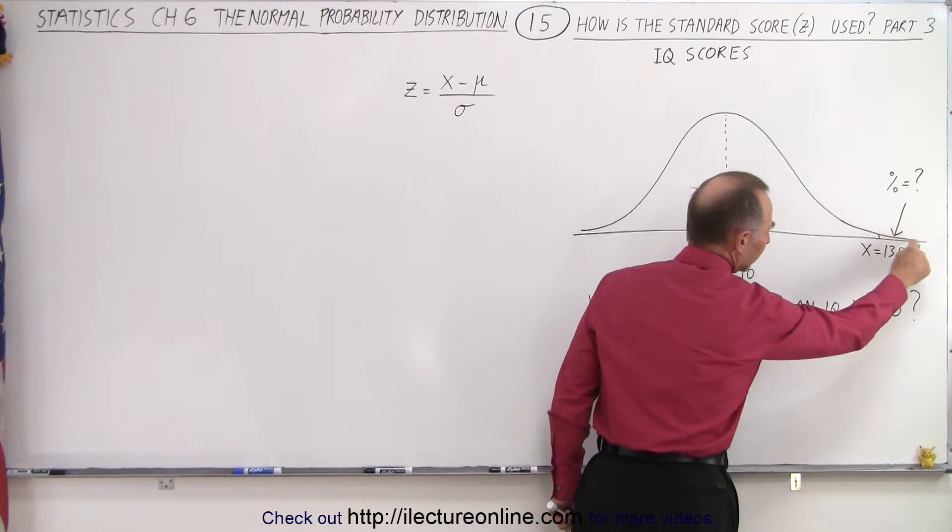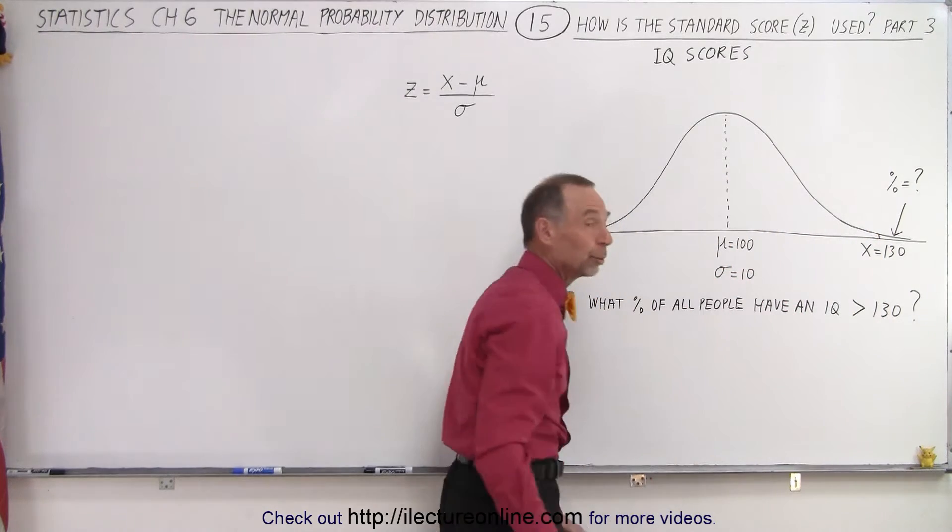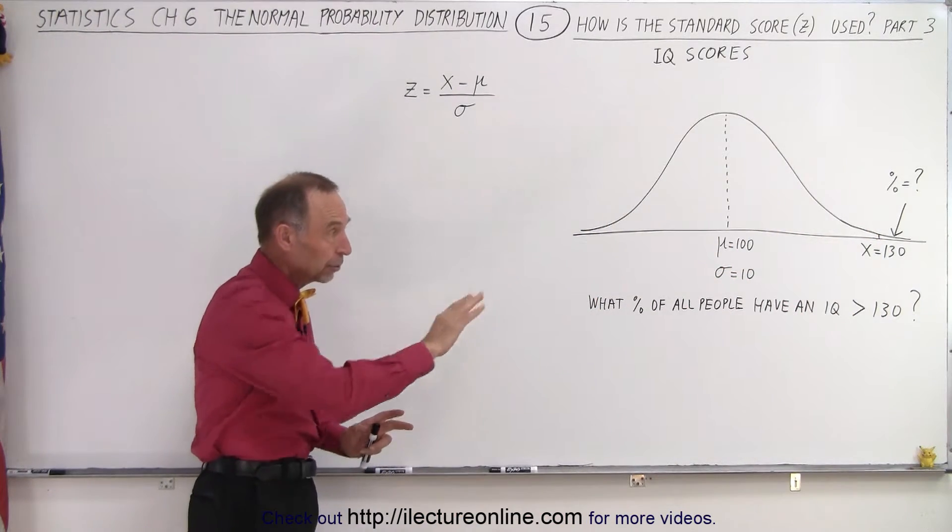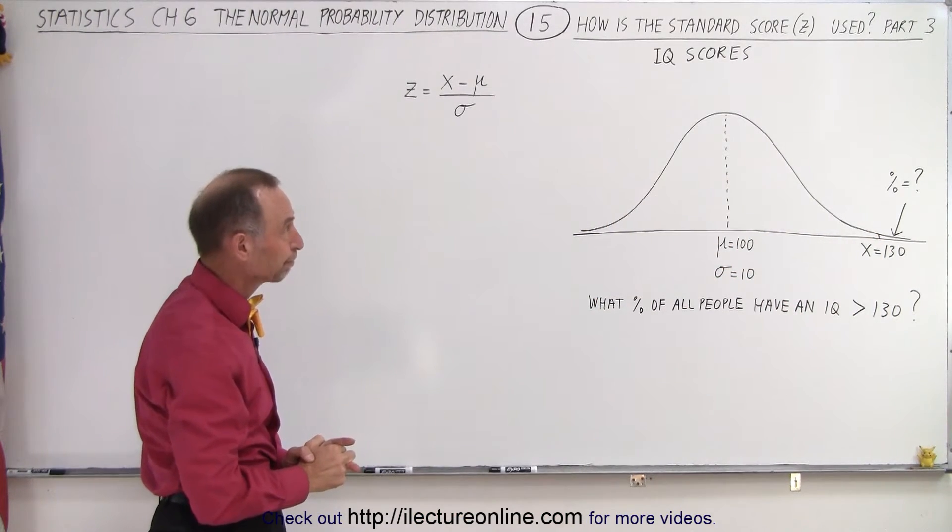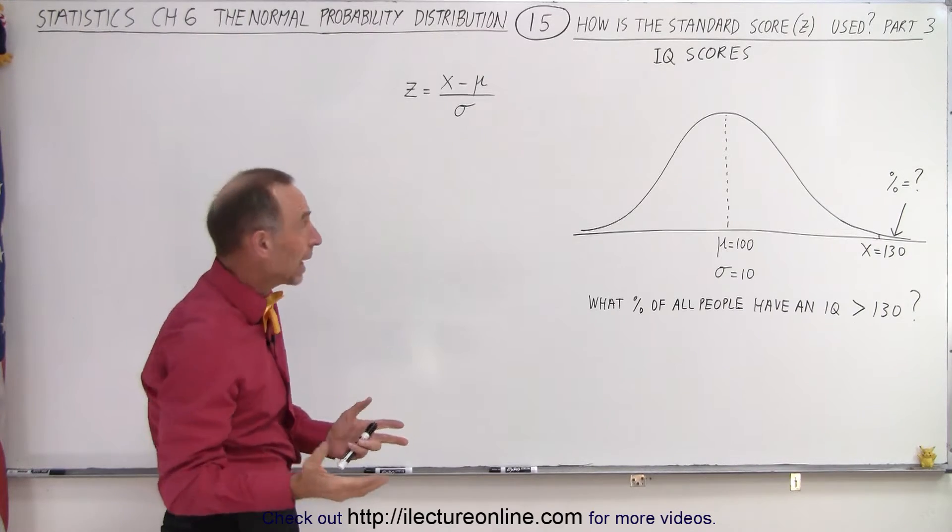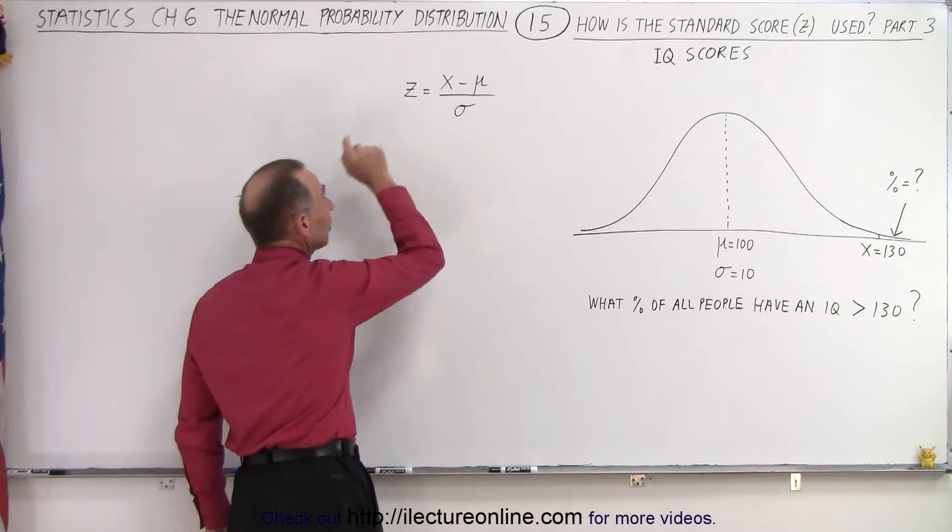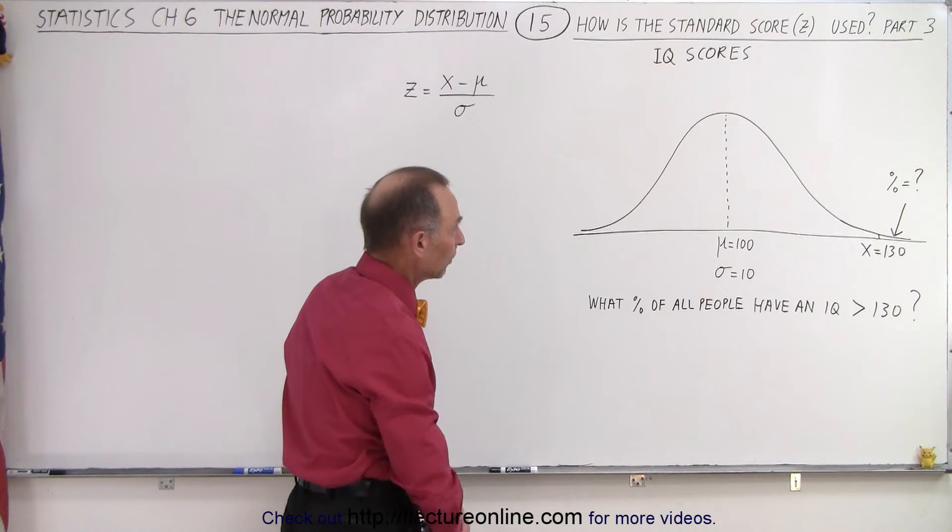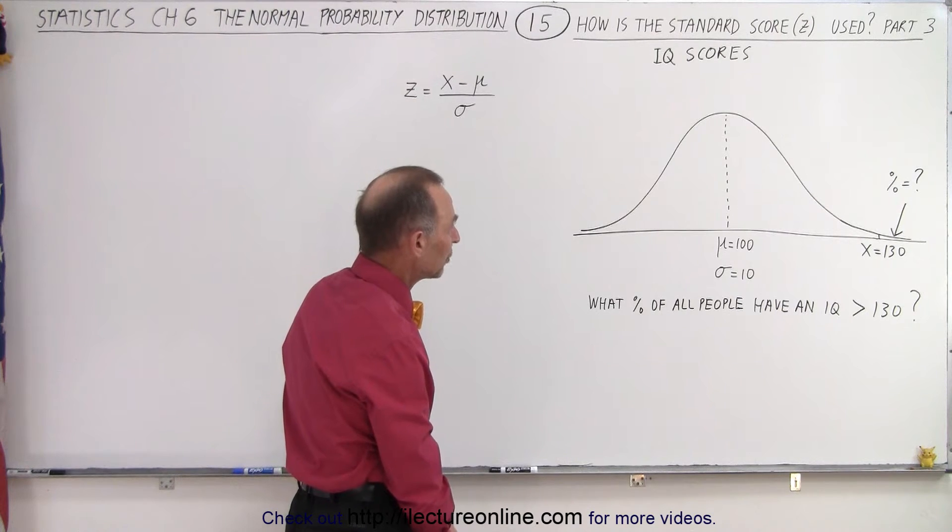In other words, we're looking for the percentage of the area underneath the normal distribution curve beyond the point x equals 130. How do we do that? We find the z-score, the standard score.